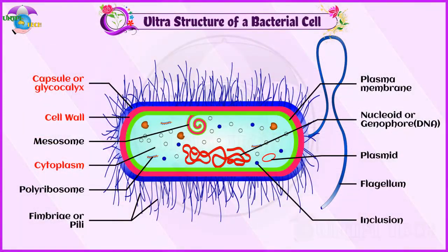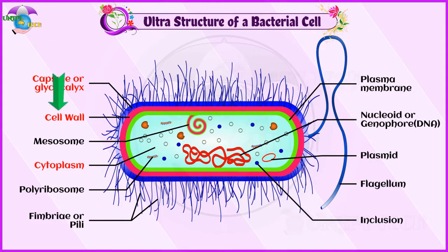The ultrastructure of a bacterial cell reveals three layers: 1. Capsule or glycocalyx, 2. Cell wall, 3. Cytoplasm.